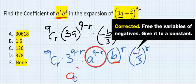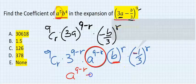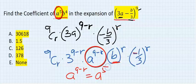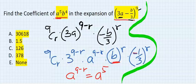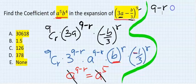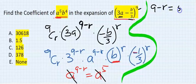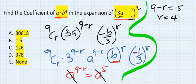So I'm going to take only a to the power of 9 minus r, and equate it to a to the power of 5. You see, a will take a, and I can have 9 minus r equals 5. You see that your r is 4.